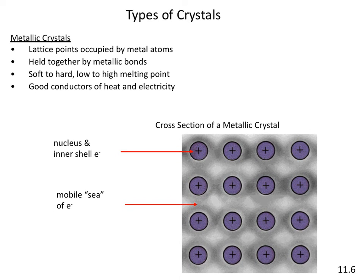Metallic bonds also form crystals because electrons are completely delocalized from all the nuclei in a big sea of electrons. Unlike ionic and covalent crystals, there is no necessary fixed arrangement, so metals can be soft and can have a range of melting points. The one thing that will generally always be true is that they are good conductors of heat and electricity because those delocalized electrons are free to move in response to an electric field.